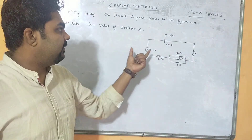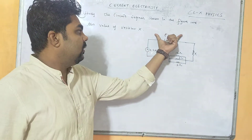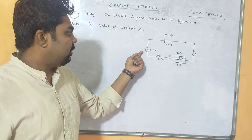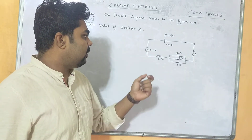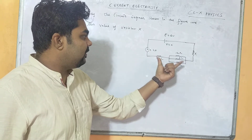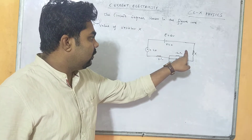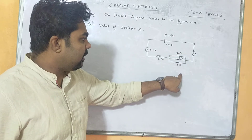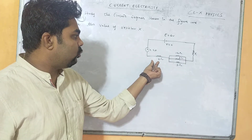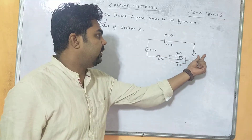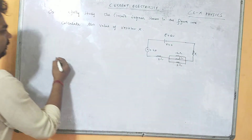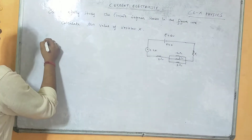First we will see what data is given in the question. EMF is given as 6 volt, there is no internal resistance, and the ammeter reading is showing 0.4 ampere. We have a 2 ohm resistance which is in series with a combination of 12 ohm, 6 ohm, and 3 ohm — these three are in parallel, and that is in series with 2 ohm and X. We need to find the value of X.